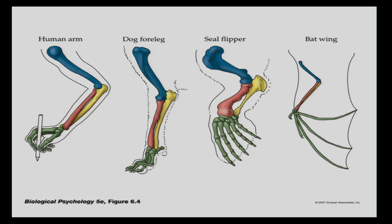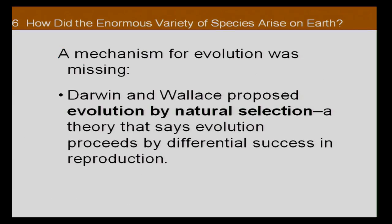At first we just had these observations, but we were in search of a theory — what would tie the similarities across different vertebrate species to how this came about? The theory developed was the theory of evolution. Two different scientists developed this concurrently. Darwin is perhaps the most known proponent, but Wallace also proposed a very similar if not identical theory of evolution by natural selection — a theory that says evolution proceeds by differential success in reproduction, with gradual change from one species to another as a function of how well you do at reproduction and what traits you happen to have.